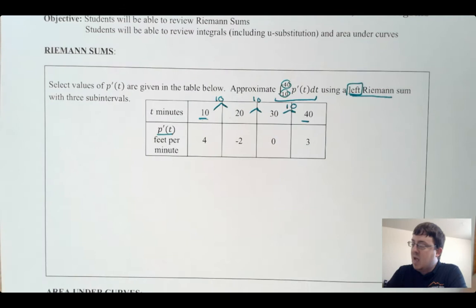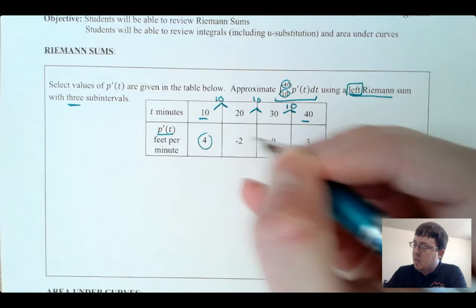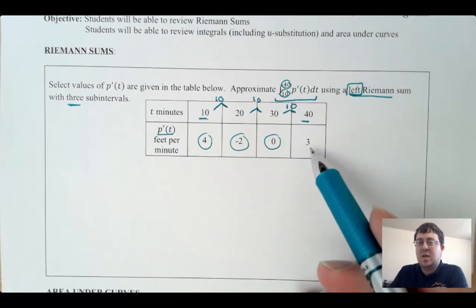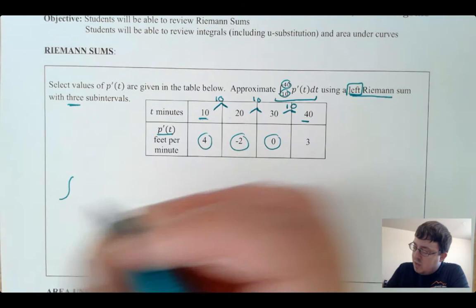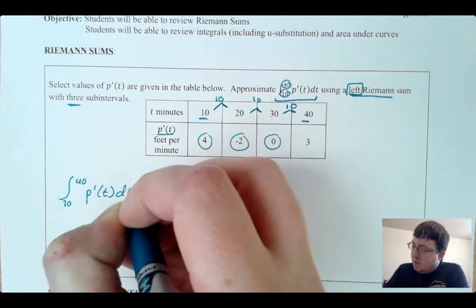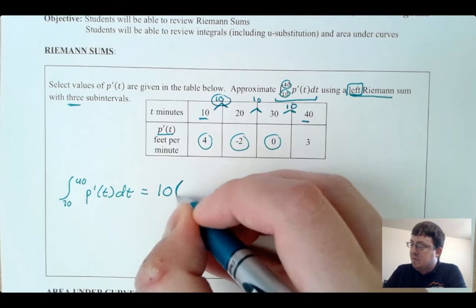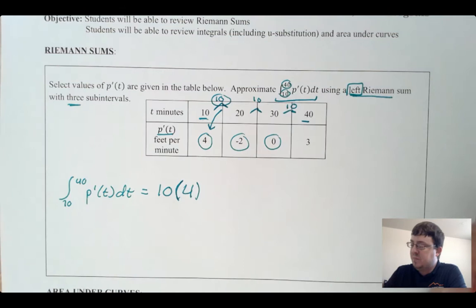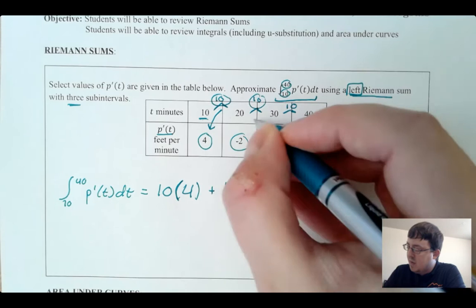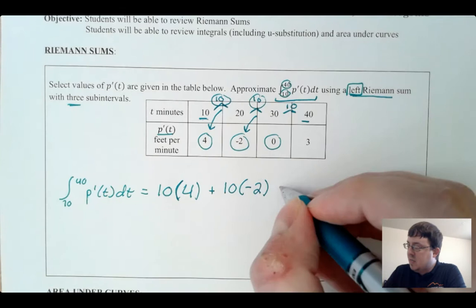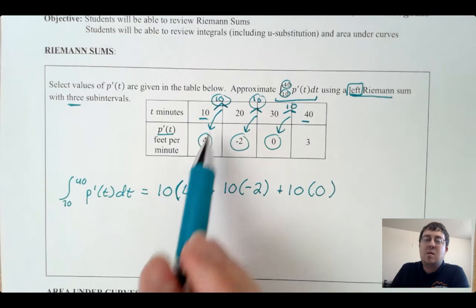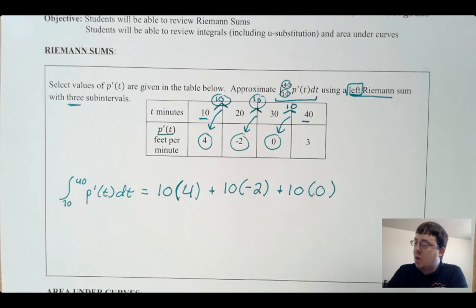So I'm only going to use the heights at t = 10, 20, and 30, because I'm looking at the left-hand side. I'm not going to use the height at 40 because that would be too far to the right. These 10s turned out to be perfectly even, but you may not always get exact even intervals like this. So make sure you're always checking the width of each interval — it may not always be the same.